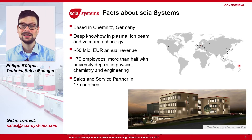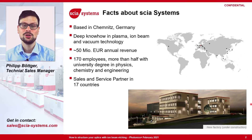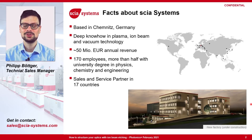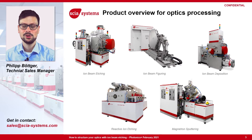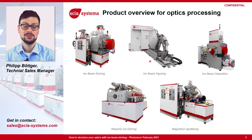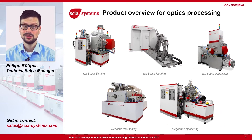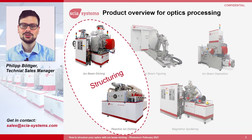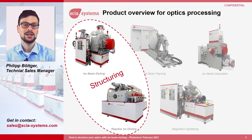We have 17 sales and service partners all around the world which can help you locally with your requirements for optics processing. We offer several technologies and tools, for example ion beam figuring, ion beam deposition or also magnetron sputtering. But of course we also offer optics structuring, for example using ion beam etching or also reactive ion etching.